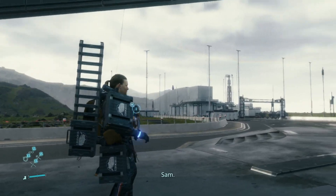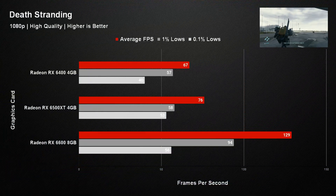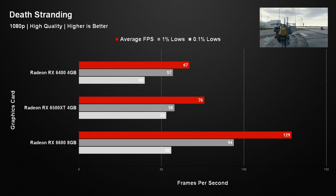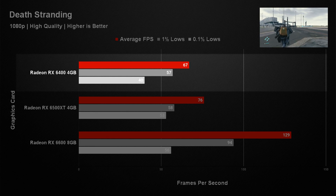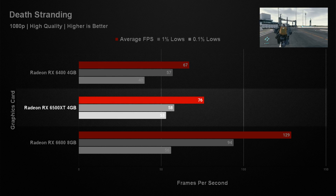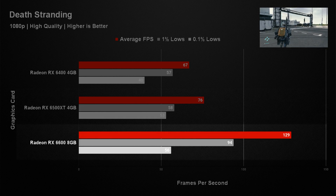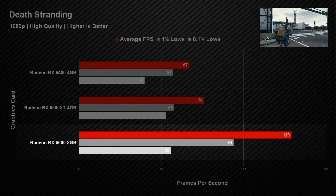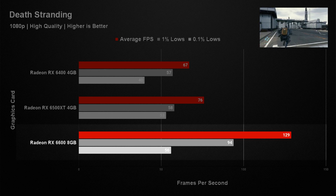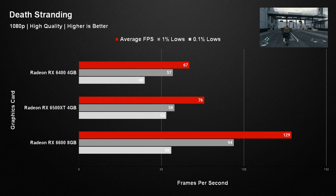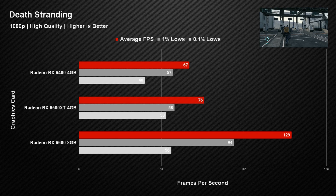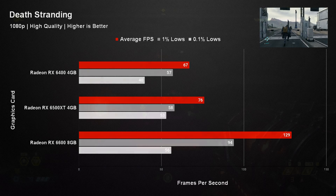In Death Stranding we saw a similar picture, but this time the gap between the RX 6400 and RX 6500 XT closed quite a bit. The RX 6400 managed an impressive 67 fps with the RX 6500 XT only just pulling ahead at 76 fps. The RX 6600 continued to show its strength with an average of 129 fps, again placing itself in a completely different tier. The 1% lows in this game were much better across all cards and gameplay was smooth regardless of the card used.